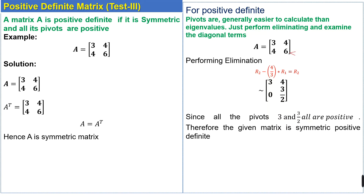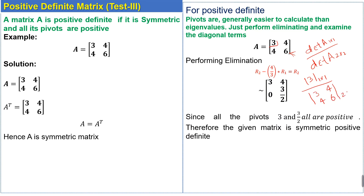We can also check the pivots using the formula: the pivot equals the determinant of the sub-matrix of A of order k×k divided by the determinant of the sub-matrix of A of order (k-1)×(k-1). For example, the determinant of the 1×1 sub-matrix is 3, and the determinant of the 2×2 sub-matrix — which is the matrix with entries 3, 4, 4, 6 — gives 2. Both pivots are positive, confirming the matrix is positive definite.